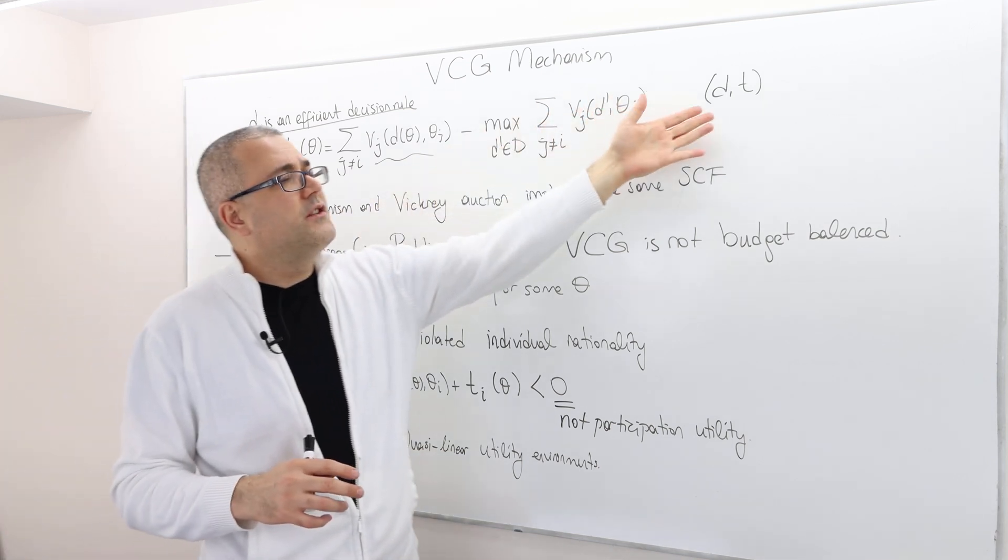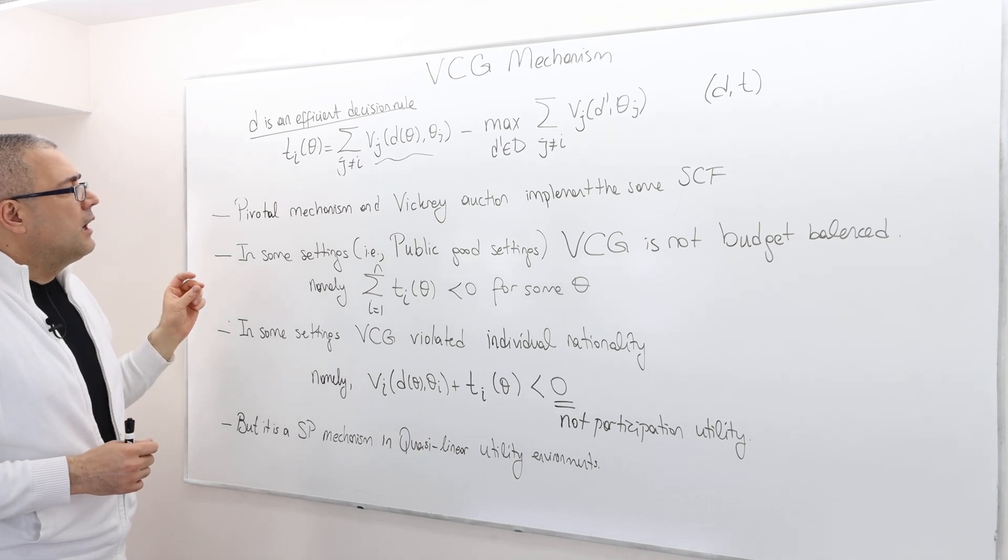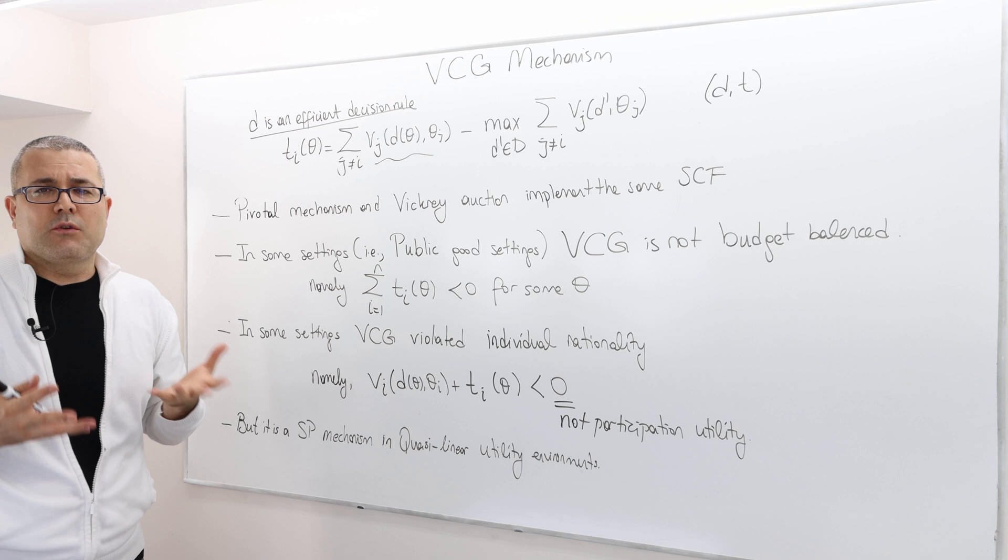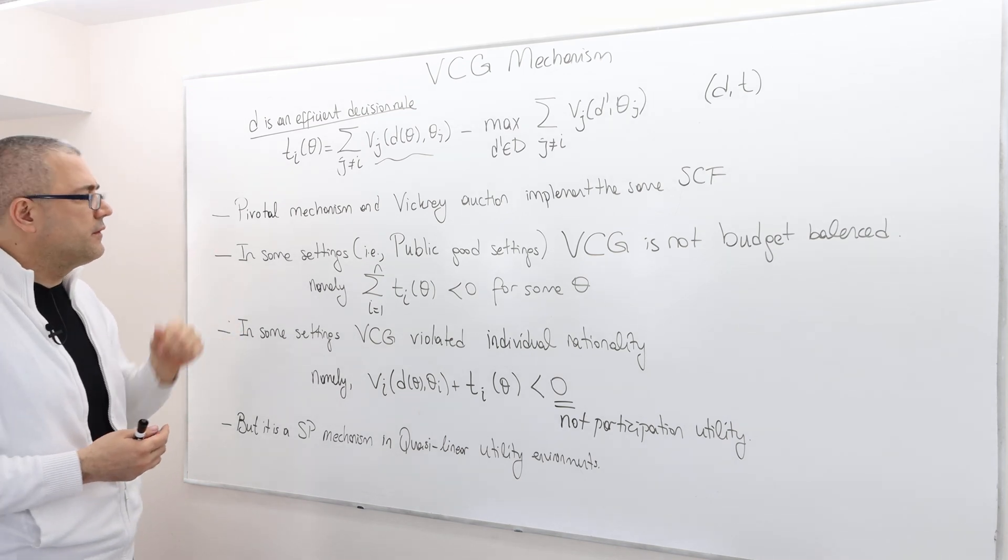So therefore the VCG mechanism is basically this tuple d and t. Well, the pivotal mechanism and Vickrey auction implements the social choice function which is what we basically just shown in the previous episodes.